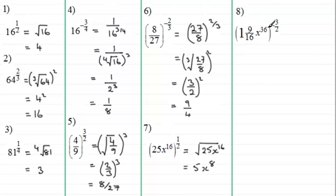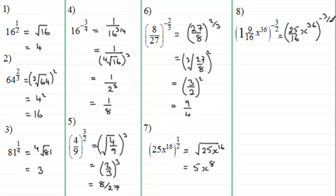Number 8: (1 and 9/16 · x to the power 36) all to the power negative 3/2. First, convert the mixed fraction to a top-heavy fraction: 1 and 9/16 is 25/16. So we have (25/16 · x^36) to the power minus 3/2. With a negative power, we invert the fraction, giving us 16/25 with x^36 on the bottom, all raised to the positive power 3/2.